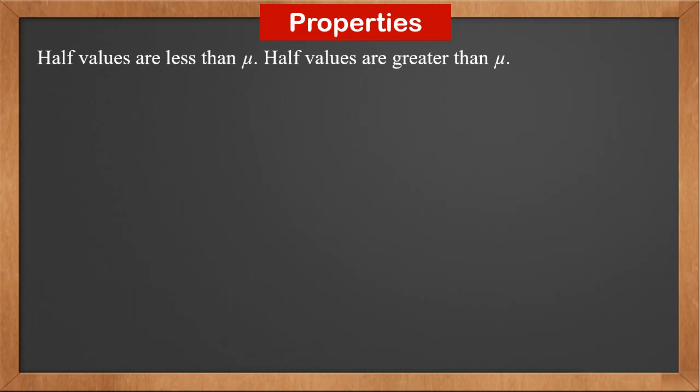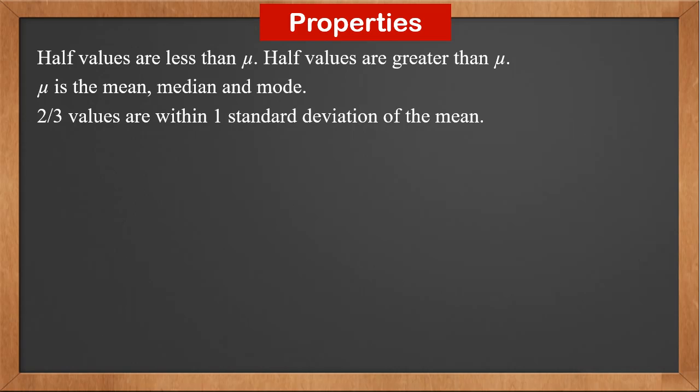In a normal distribution, half the values are less than mu and half are greater than mu. Mu is the mean, median, and mode. Now let's look at three other important properties of normal distribution. Two thirds of the values are within 1 standard deviation of the mean. This means x is between mu minus sigma and mu plus sigma. On the graph, we can see that this range covers two thirds of all values.